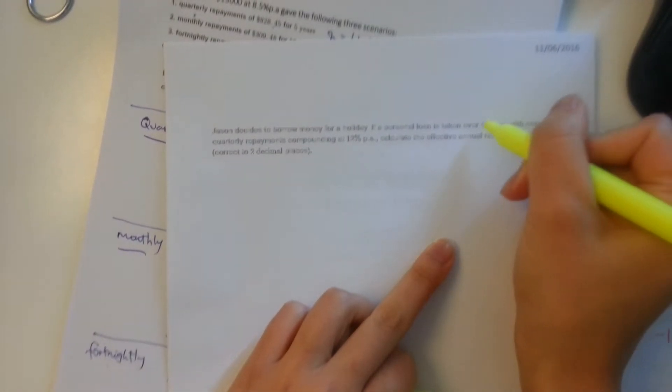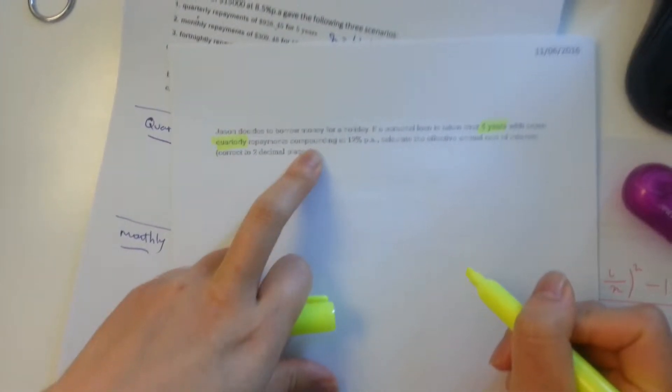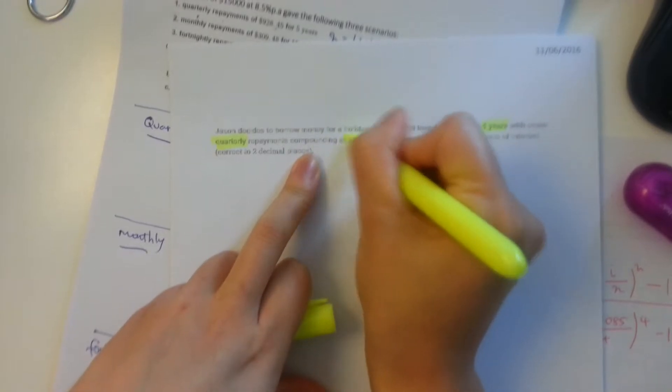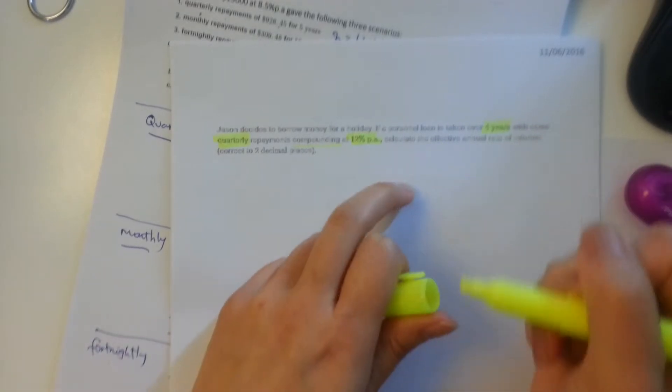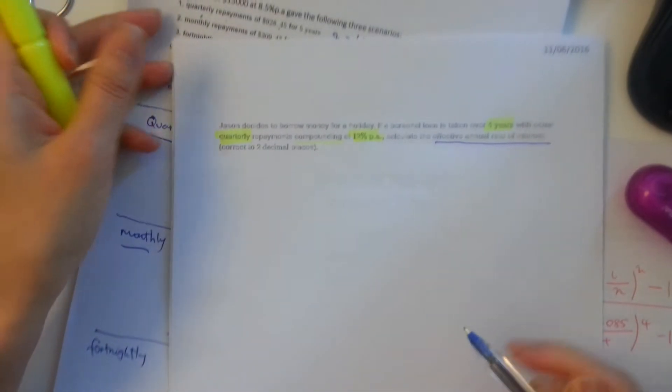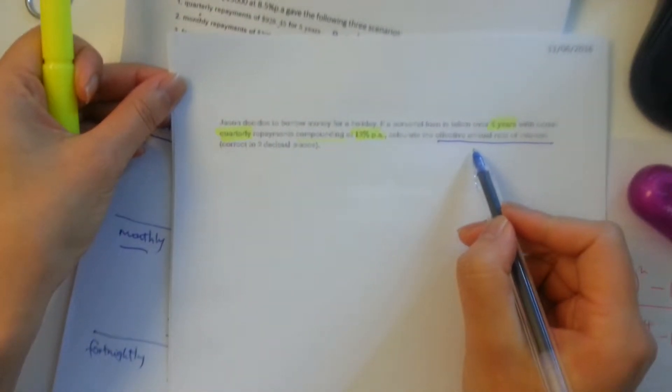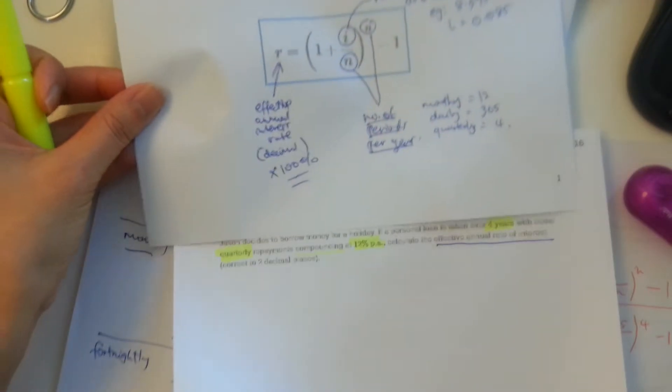Let's go on to our example on the following page. So on page two, it says here, Jason decides to borrow money for a holiday. If a personal loan is taken over four years, so let's highlight some important information. Four years with equal quarterly repayments, compounding, so we know we're doing a reducing balance loan at 12% per annum. Calculate the effective annual interest rate, correct to two decimal places. So whenever you see effective annual interest rate, just remember the formula that we just dealt with before.